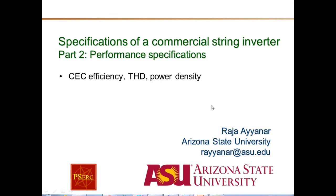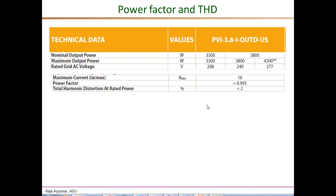This is a continuation of the video on specifications of a commercial string inverter. In this part two, we are going to focus on the performance specifications such as the inverter efficiency, the total harmonic distortion, the power factor, and the power density of the inverter. The inverter we have been considering is a 3.8 kilowatt auto-rated isolated string inverter rated for 3.8 kilowatts at 240 volts, but at a slightly lower power of 3.3 kilowatts at 208 volts.